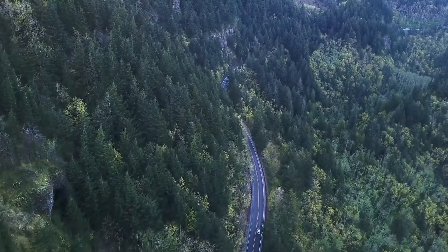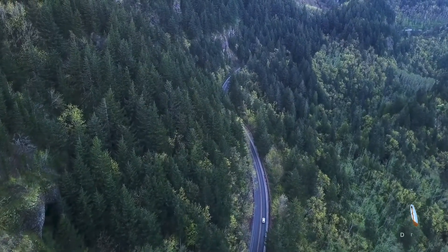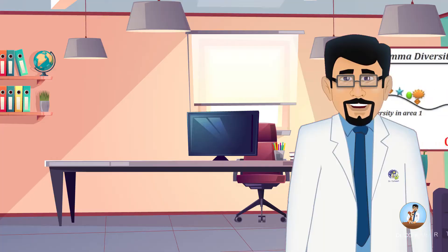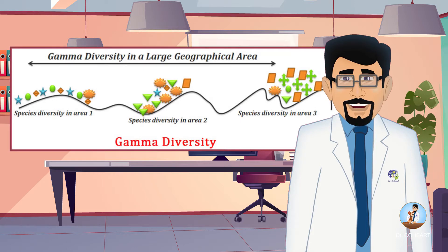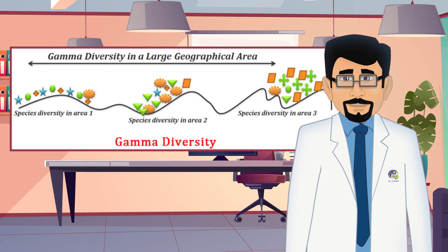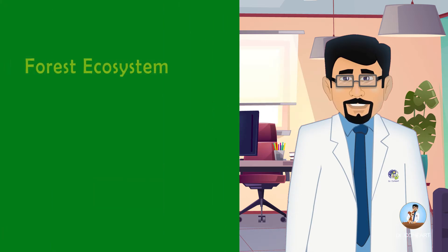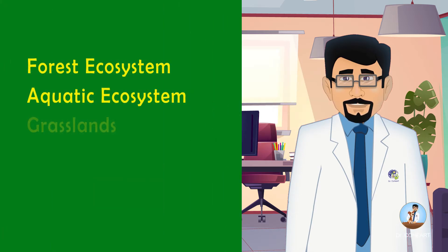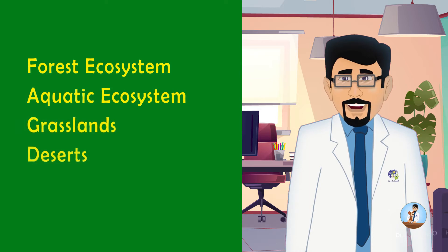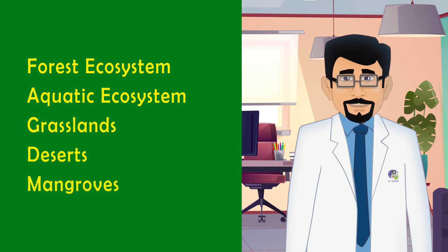The diversity of the habitats over total landscape or geological area is referred to as gamma diversity or landscape diversity. For example, the forest ecosystem, aquatic ecosystem, grasslands, deserts and mangroves.